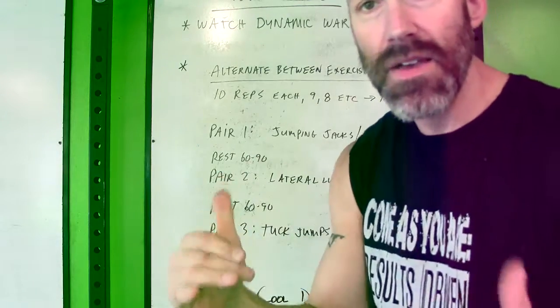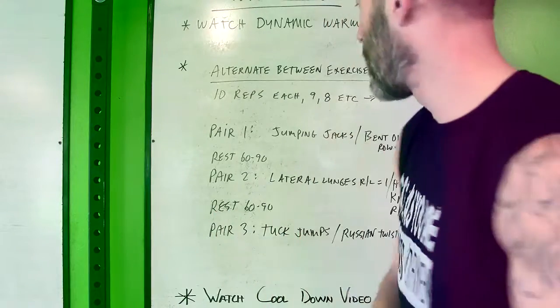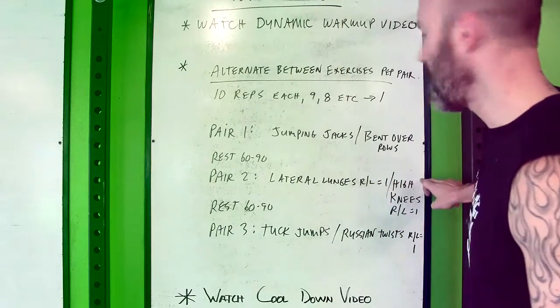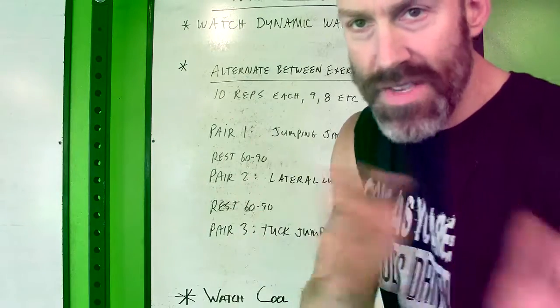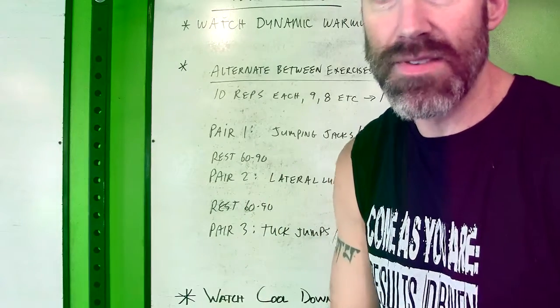For example, lateral lunges and high knees - both sides of the lateral lunge equals one rep, both sides of the high knee equals one rep.